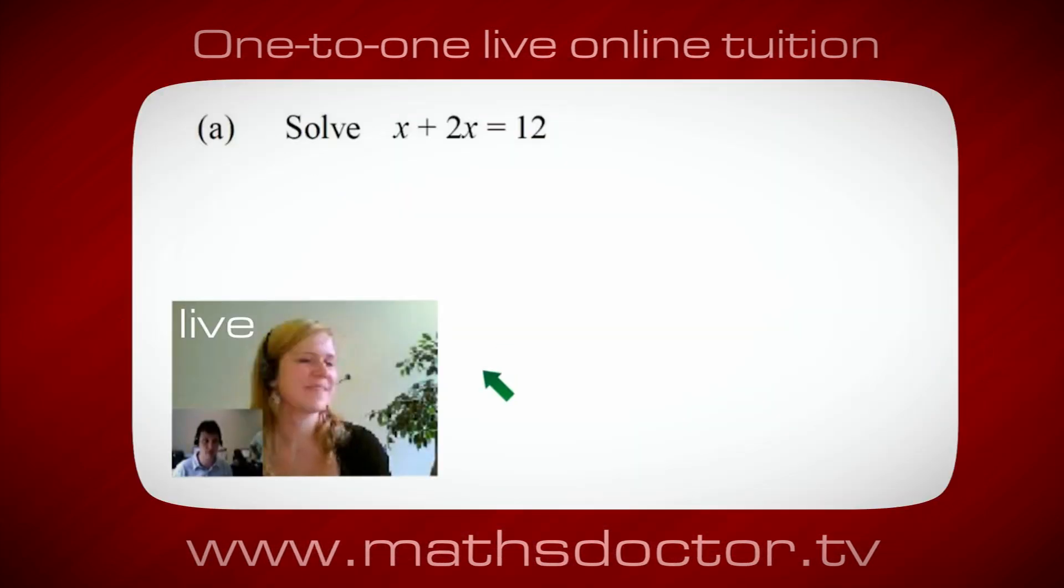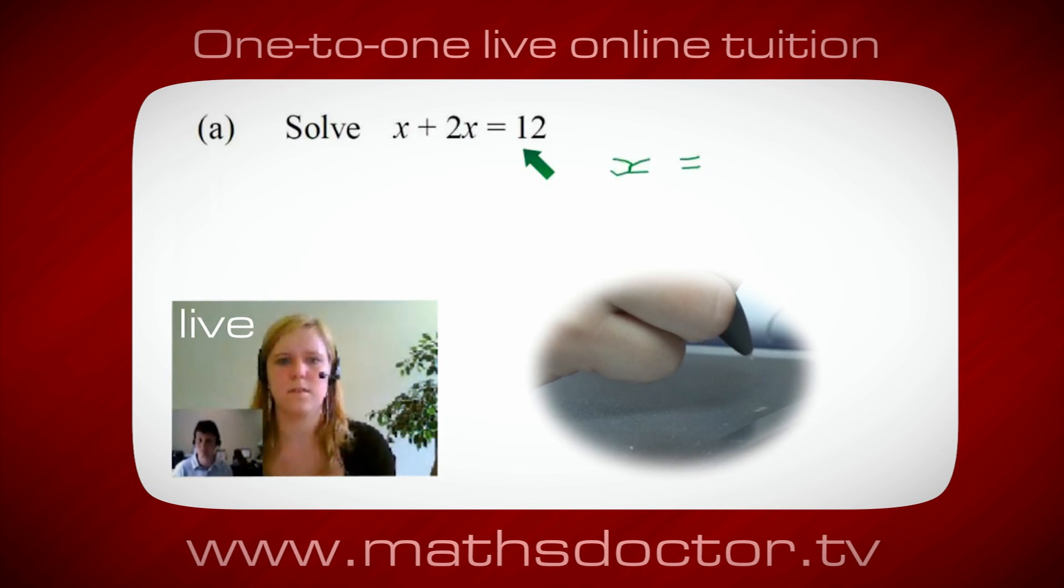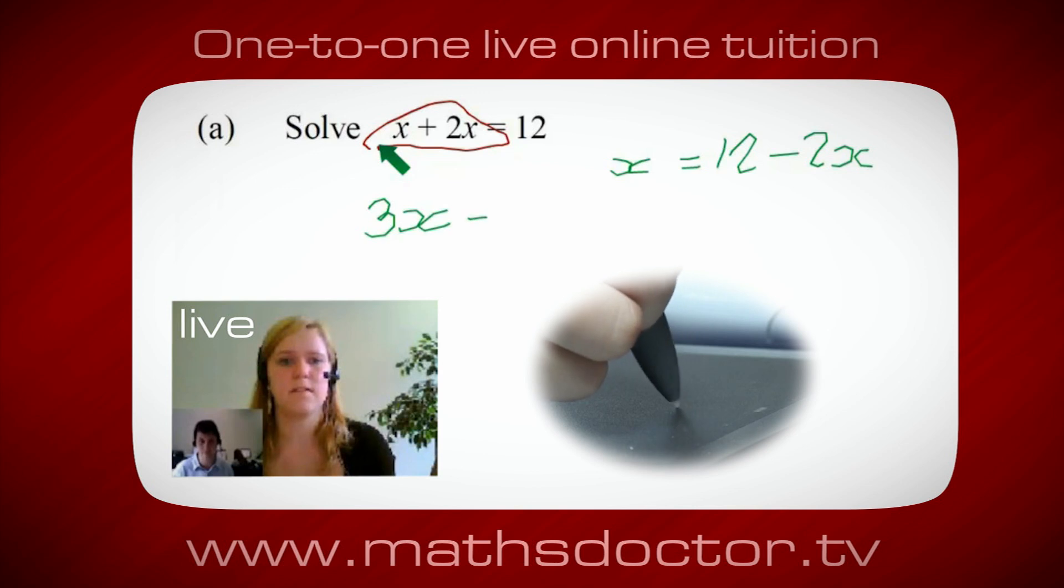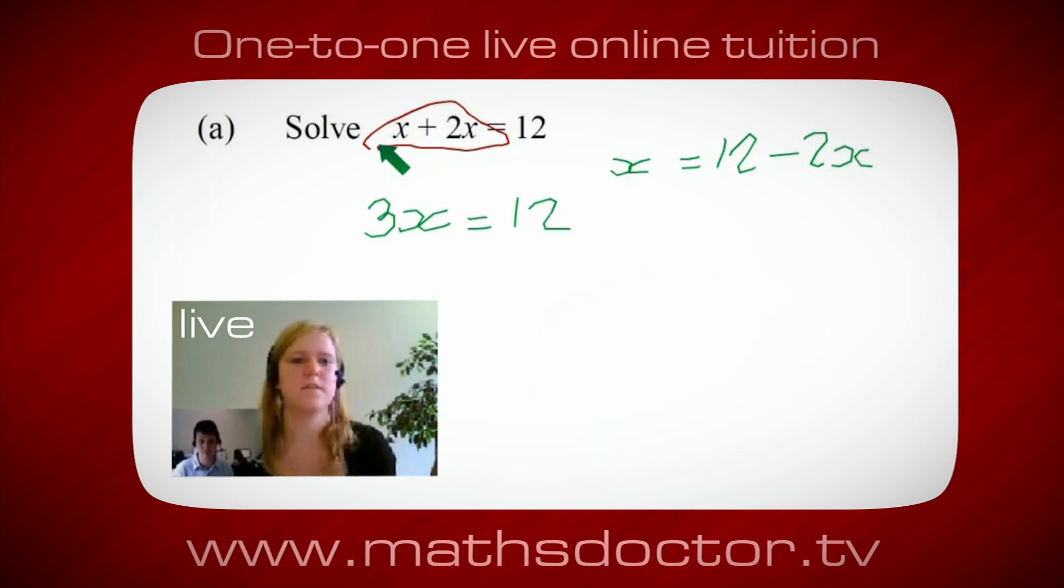OK Marie, so let's have a look at this one. Solve x plus 2x equals 12. So what do you think you do first? OK, well, I want x on its own. So I would put x equals 12 minus 2x. OK, so a lot of the time we want to get x by itself, but what we want to do first is get all of these x's together. So can you see anything we can do with this? Get all these together in one place. Oh, OK, it's 3x, isn't it? Yeah, absolutely. So 3x equals 12. Oh, and so x equals 4. Brilliant, spot on, well done.